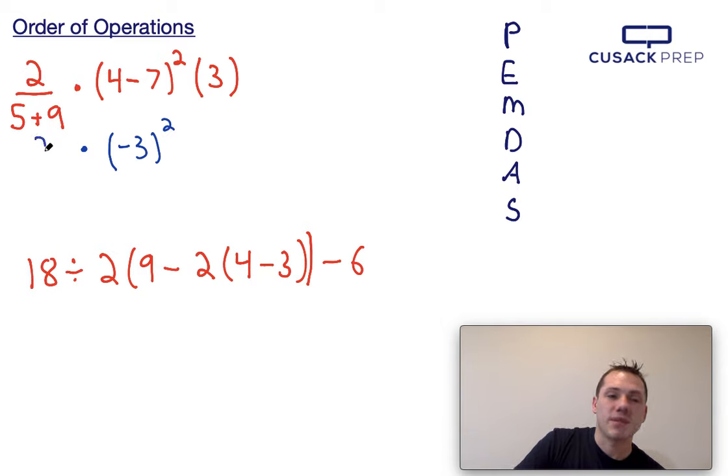Now you might say 5 plus 9, well that's not in parentheses, Brendan. But we know that any time you have a fraction, there are what are called implied parentheses around the numerator and the denominator. So let's just kind of assume there's parentheses here and here.